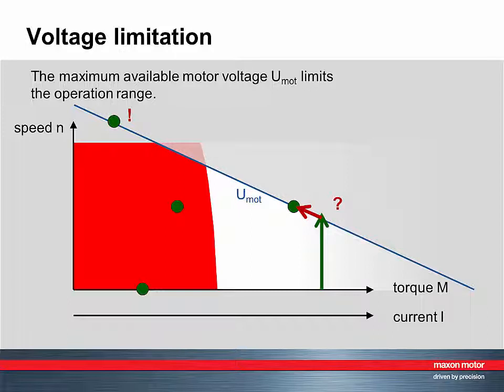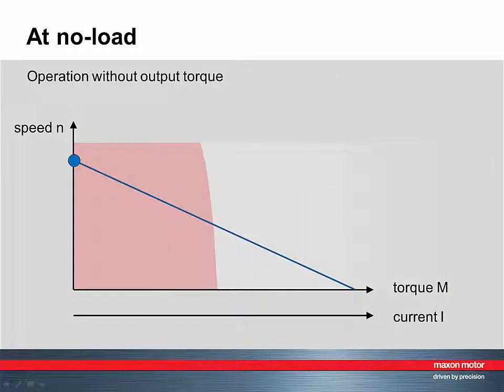We come back now to the three special operating points at nominal voltage. We start with the no-load operating point. No-load is a little misleading because the motor is slightly loaded. There is no external load, but the motor has to drive itself.